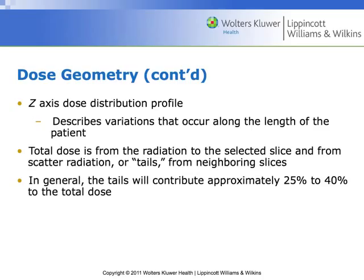Z-axis dose distribution profile is a fancy way to talk about the variations as we move the patient through the scanner. The width and diameter of the patient changes as we move along the Z-axis, so the dose distribution is going to change.